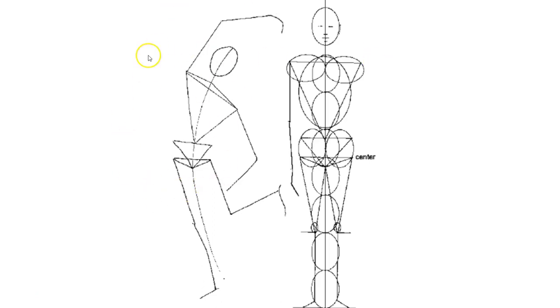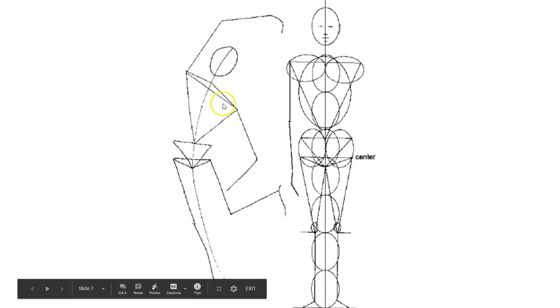This person right here is moving, and so their line of motion goes from this direction up. If you think about how you want the person to be moving, you can always draw a line of motion and try to draw the body on top of that. I'll tell you, it's not easy and you're not going to be perfect at it the first time.